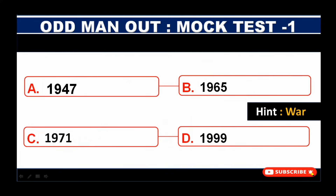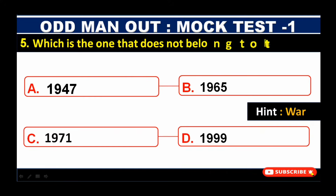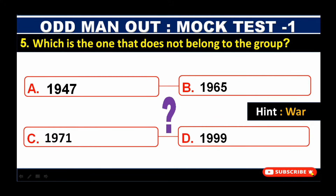In this question, we can see four years in which three are associated with war between India and Pakistan, and you have to find the odd one.